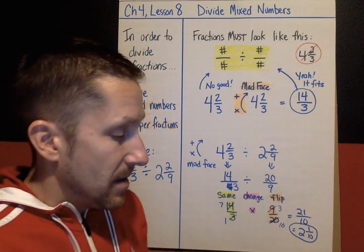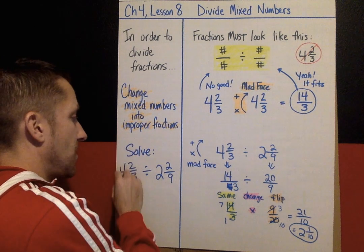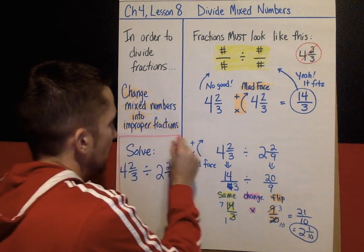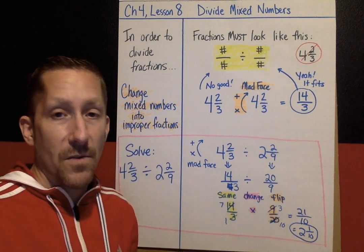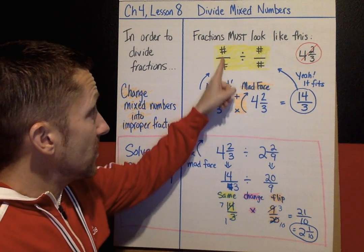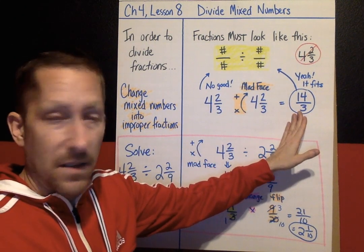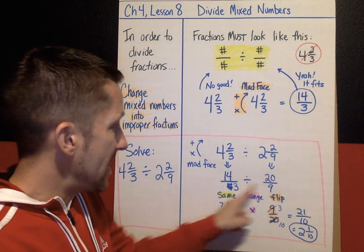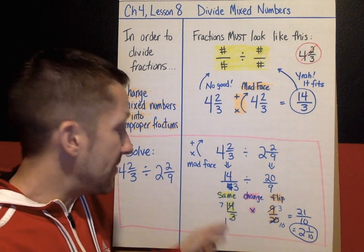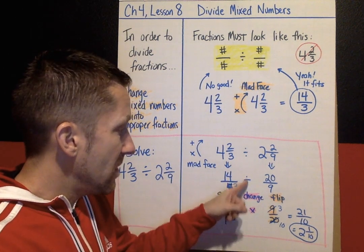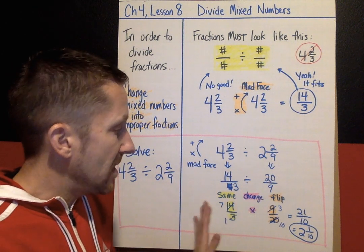So today you're going to be practicing solving mixed numbers divided by mixed numbers. Just to recap Lesson 8: get your numbers looking like number over number divided by number over number. If you have mixed numbers, use the mad face to convert them into improper fractions. After that, it's just like Lesson 7 — same, change, flip. This fraction stays the same, rewrite division as multiplication, and flip or take the reciprocal of the second fraction. Then multiply and simplify.